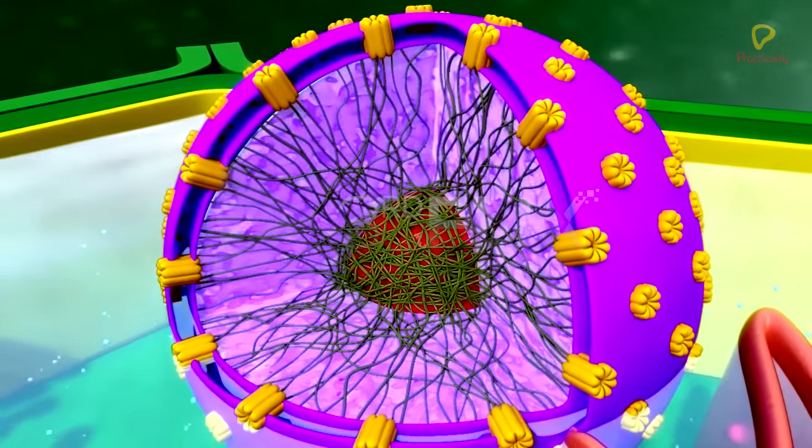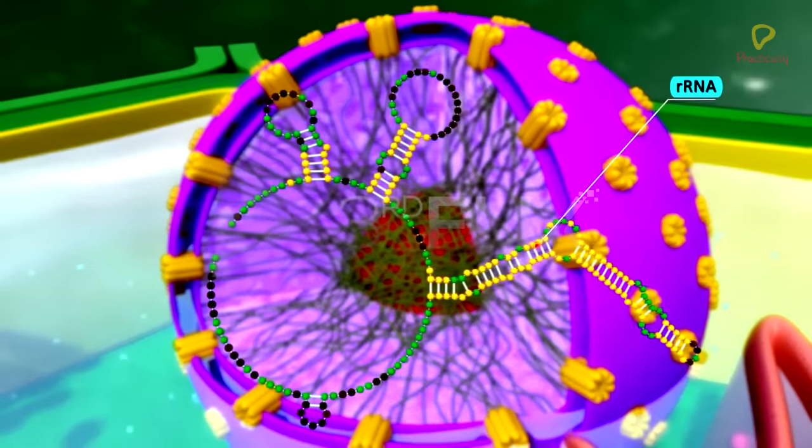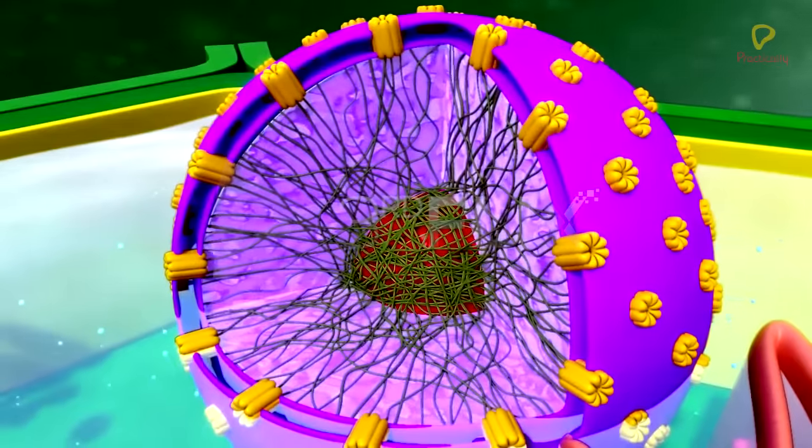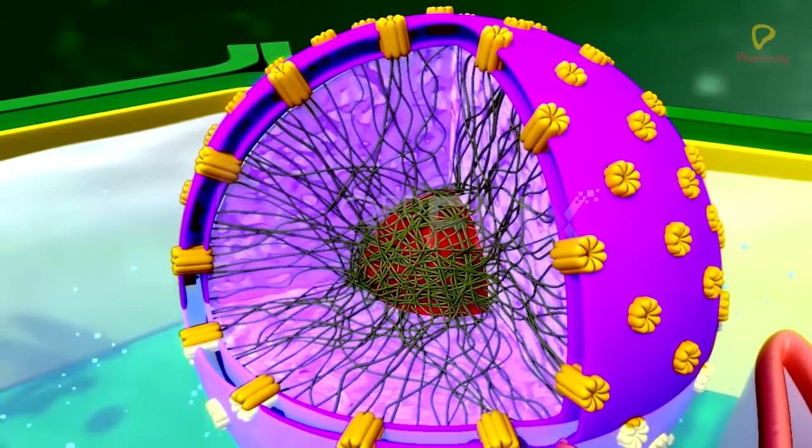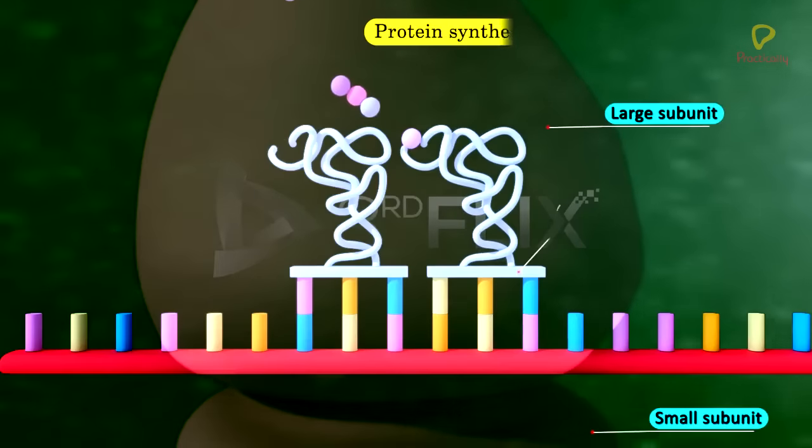Nucleolus is the site for active ribosomal RNA synthesis. The cells with larger and more number of nucleoli carry out protein synthesis actively.